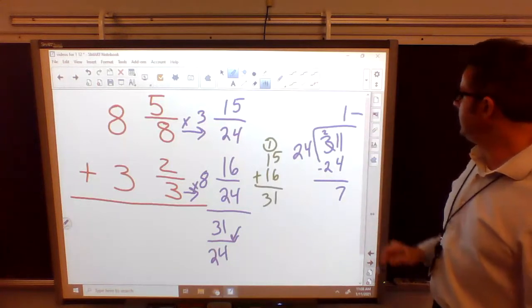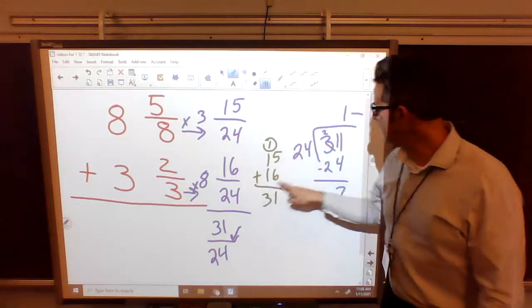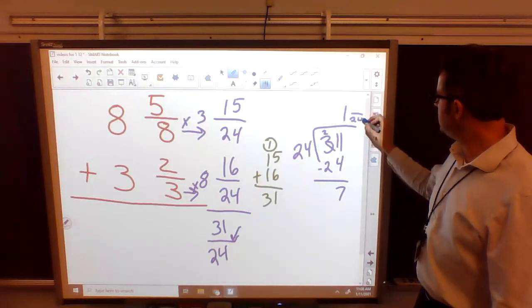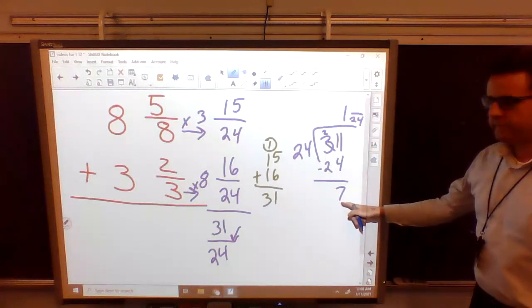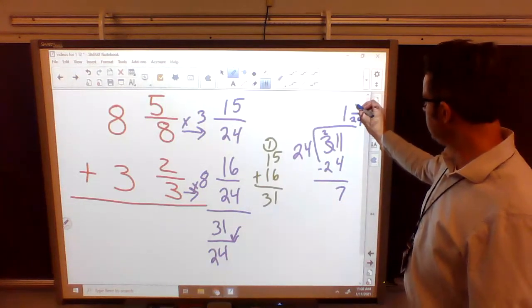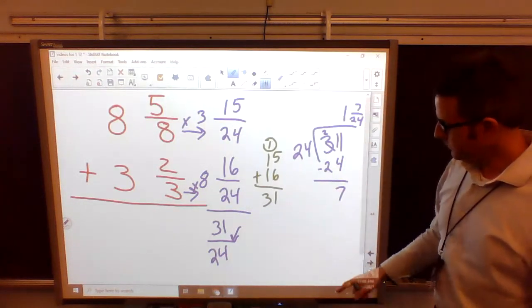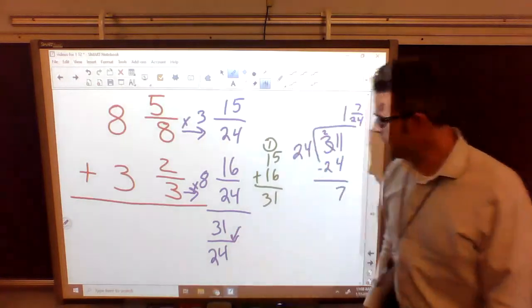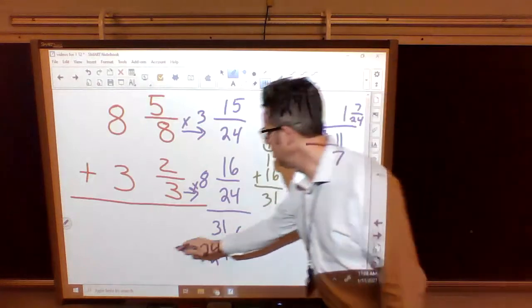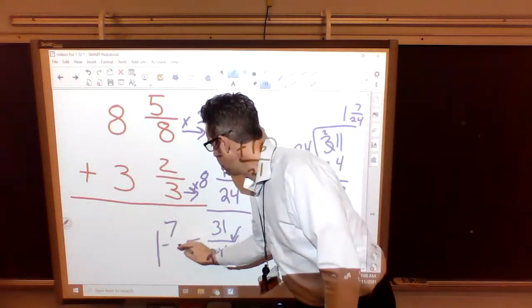So we're going to put our fraction bar here. We are still dealing with 24ths, so our bottom number is going to remain 24. The 7 pieces left over that did not fit in a whole will go up top. So 31 over 24 is really the mixed number 1 and 7/24.